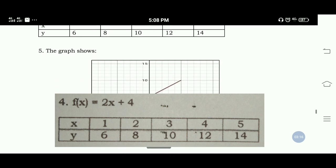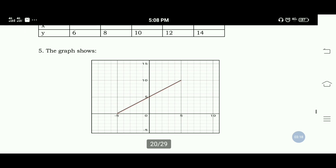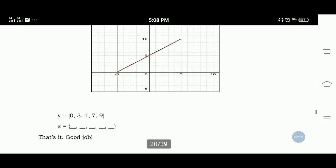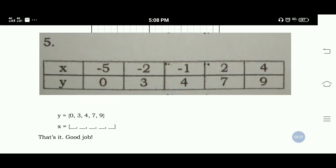Number 5: The graph shows if y is 0, 3, 4, 7, 9, x is equal to negative 5, negative 2, negative 1, positive 2, and 4.